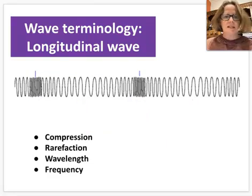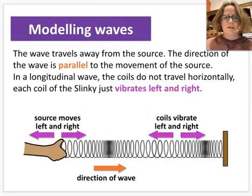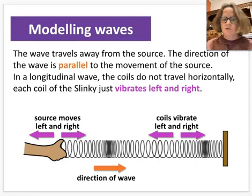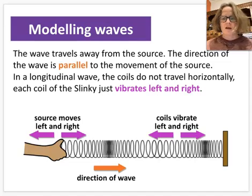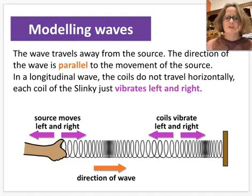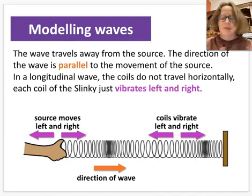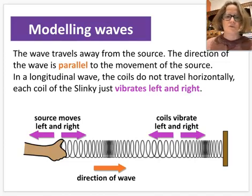Let's look at our slinky model for longitudinal waves. The wave travels away from the hand, and the direction of particle movement — the coils moving — is parallel to the movement of the energy source. In a longitudinal wave, the coils don't actually travel horizontally; each section just vibrates to the right and to the left, then back to where it started as the wave moves past.